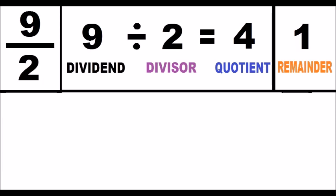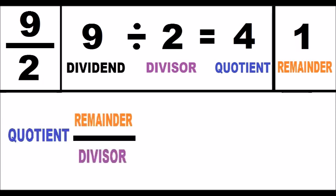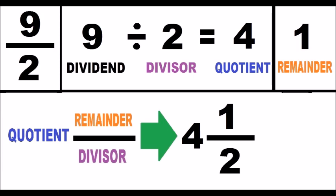Third step, I look at the following diagram and I replicate it, replacing each element with the elements of the previously calculated division. Finally, I get the mixed number that is equivalent to the initial improper fraction. Thanks for watching.